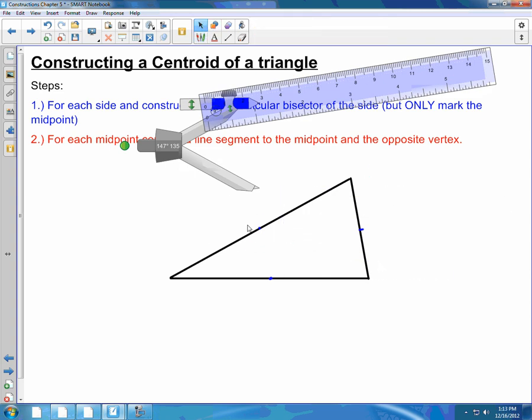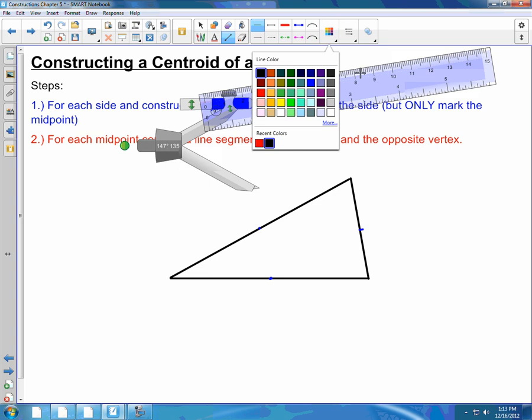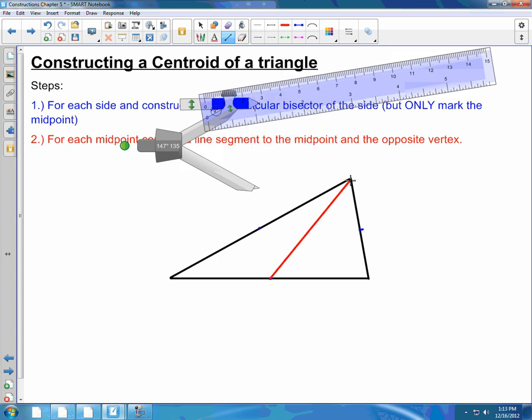So I have the three midpoints marked. Go to step two. For each midpoint, I'm going to connect it to its opposite vertex. Here's the first one. Second one. And third one.